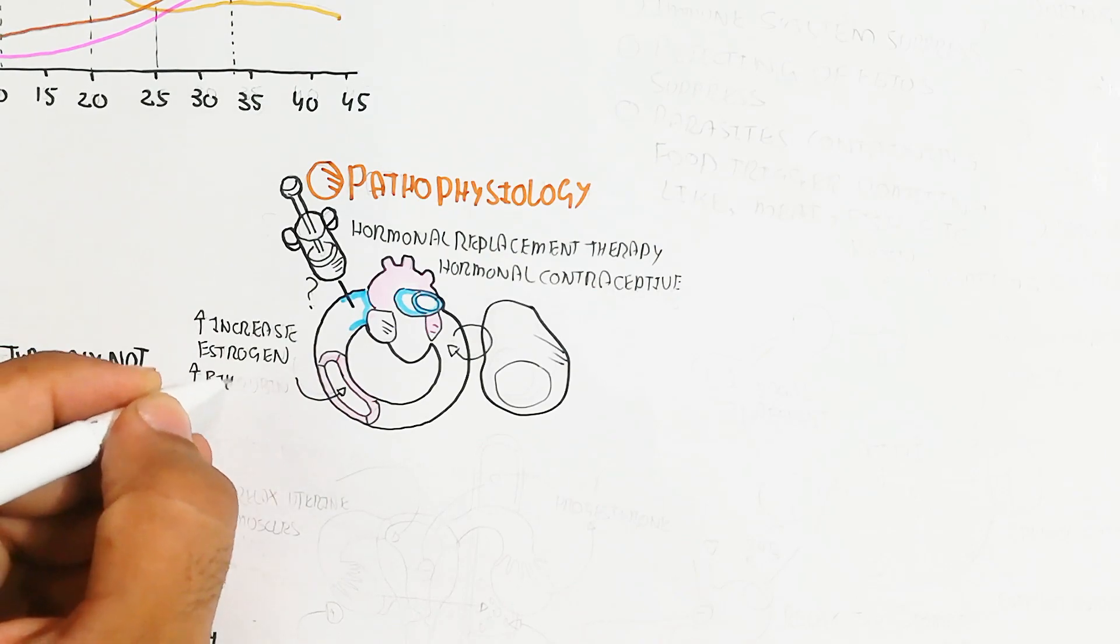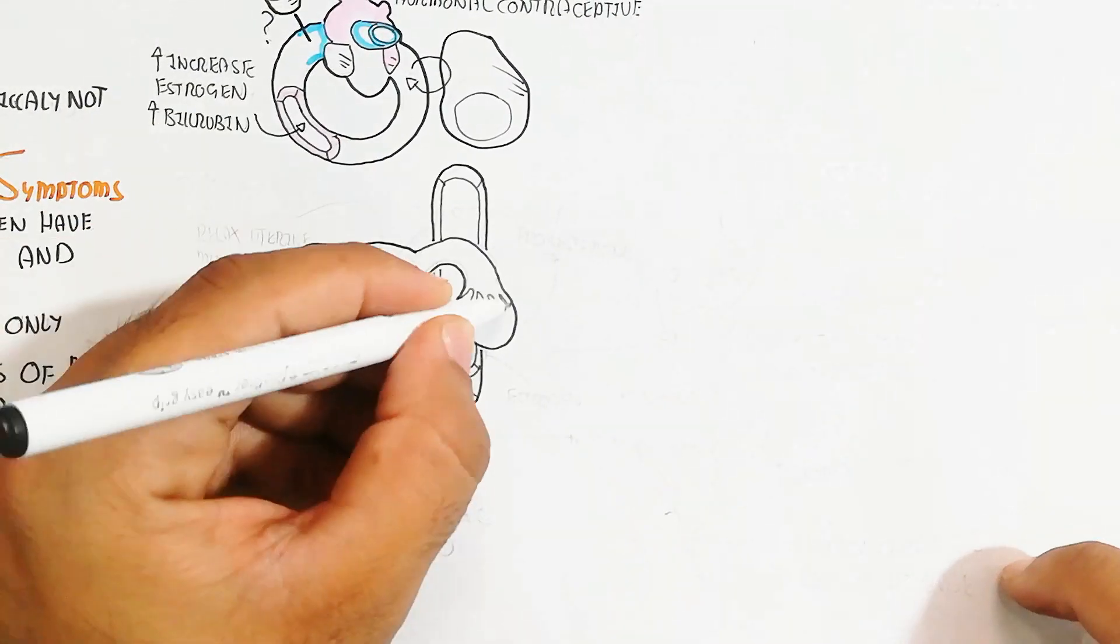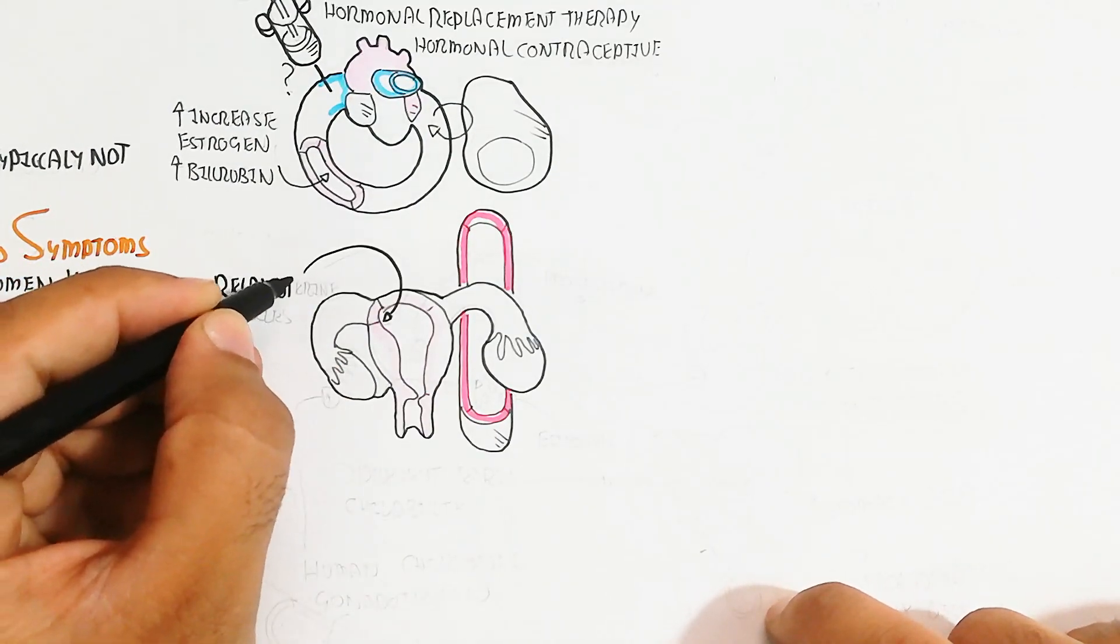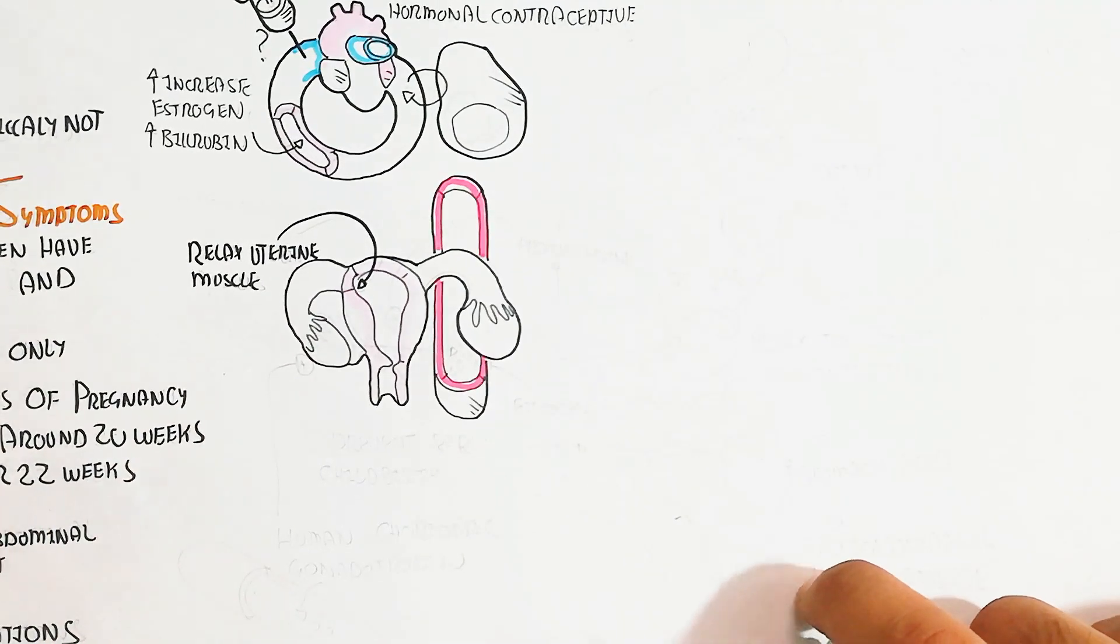Whenever the introduction of hormones like estrogen and progesterone to the blood circulatory system occurs, it will lead to vomiting. The increase of estrogen as well as human chorionic gonadotropin and progesterone are important causes of vomiting.